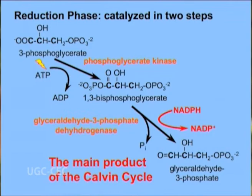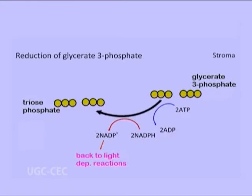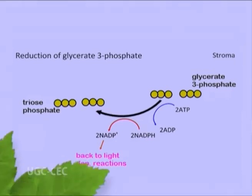The enzyme glyceraldehyde 3-phosphate dehydrogenase catalyzes the reduction of 1,3-BPGA by NADPH. Glyceraldehyde 3-phosphate, also called G3P or PGAL or GAP, is produced and the NADPH itself is oxidized and becomes NADP+. Again, 2 NADPH are utilized per carbon dioxide fixed.